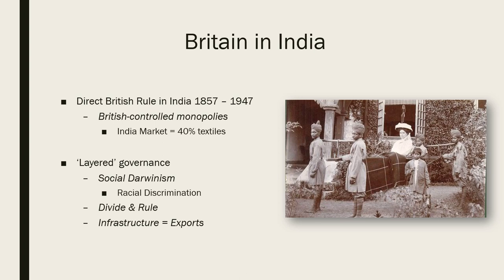India became the number-one purchaser of British textiles. Why was that so important? By the 1850s, countries like Germany and the United States were becoming competitive with Britain. Factory owners were eager to see profits continue, jobs filled, and markets opened. The best way to do that was to ensure a captive market.